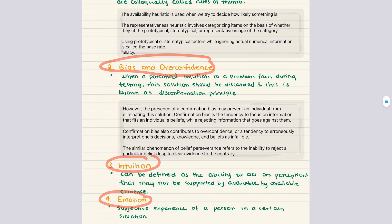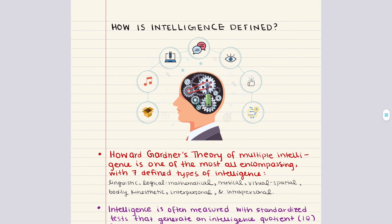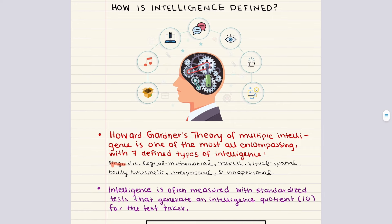The last topic in objective two is intellectual functioning. How is intelligence defined? What makes someone more intelligent than someone else? Howard Gardner's theory of multiple intelligences is one of the most all-encompassing definitions, with seven defined types: linguistic, logical-mathematical, musical, visual-spatial, bodily-kinesthetic, interpersonal, and intrapersonal. Gardner argues that Western culture values the first two — linguistic and logical-mathematical — over the others, which are also the two abilities tested on traditional IQ tests.